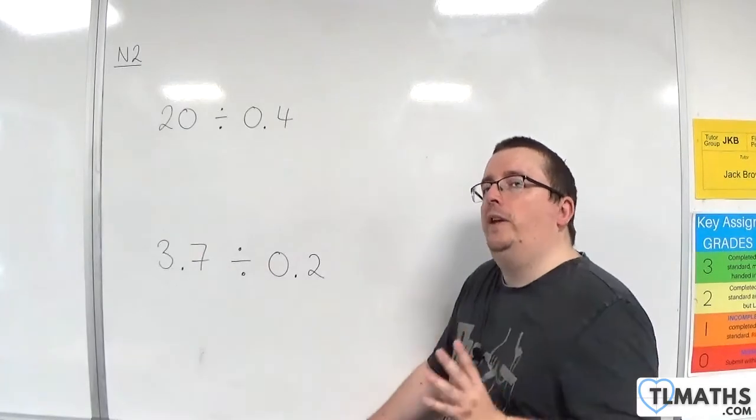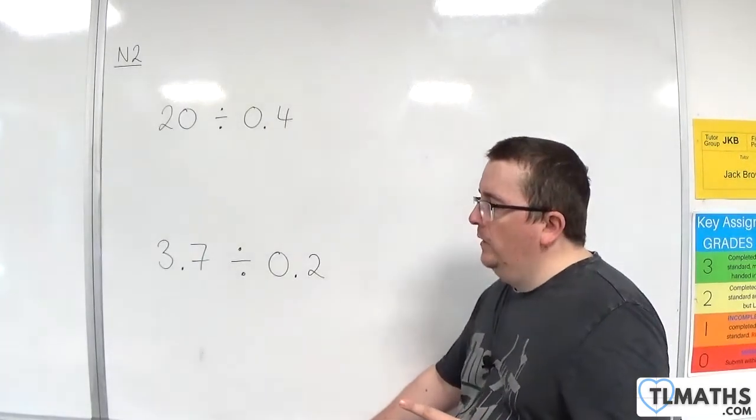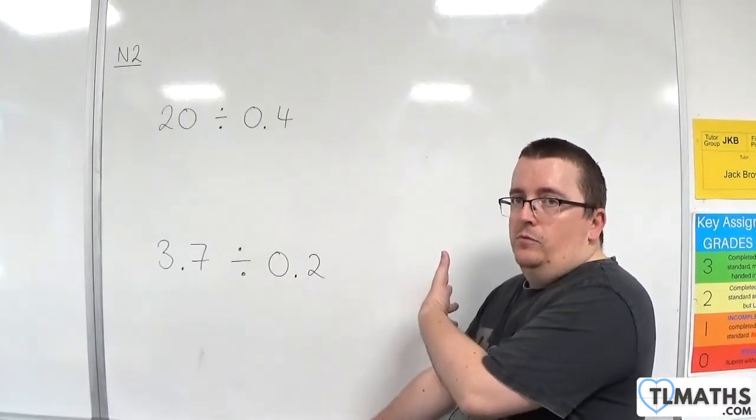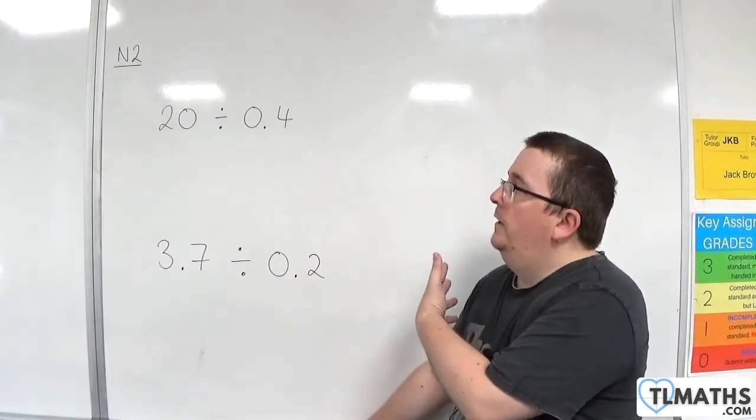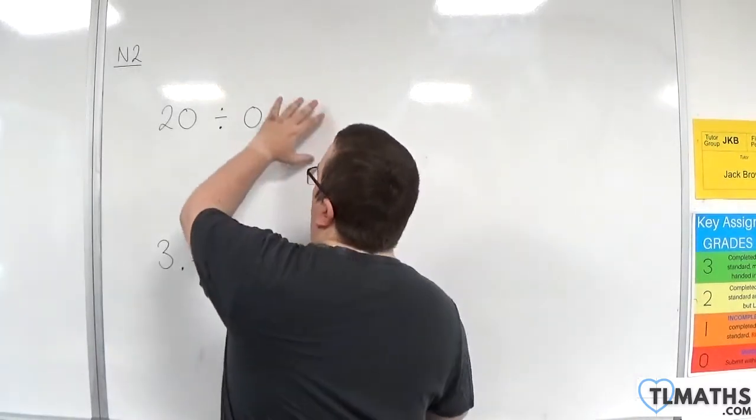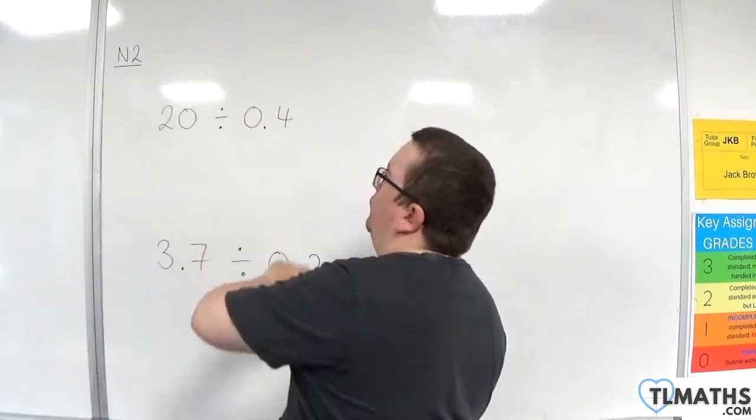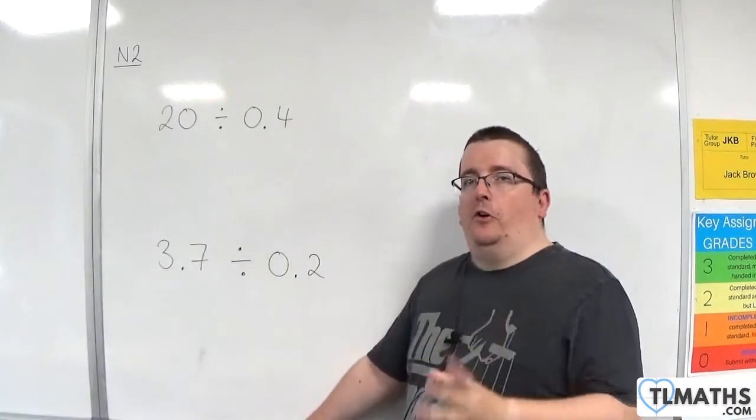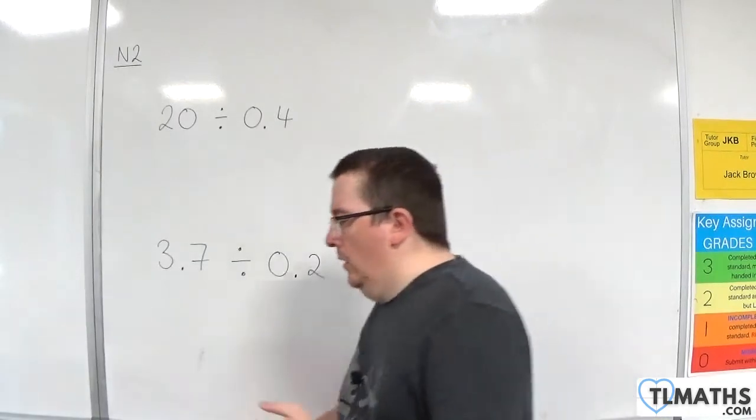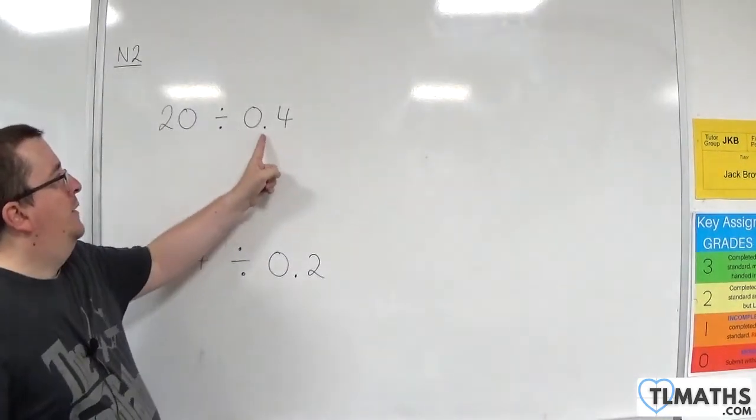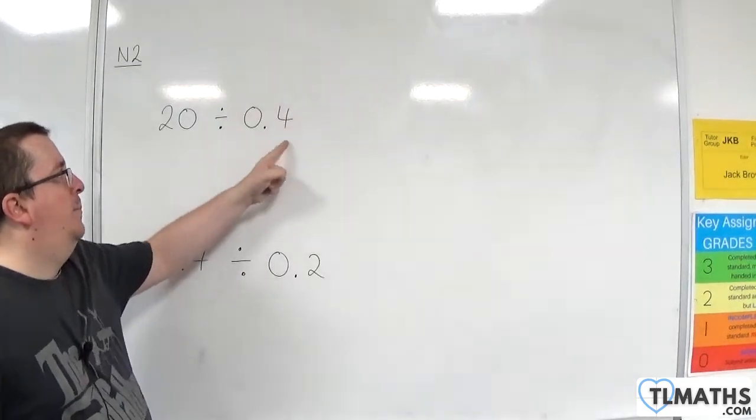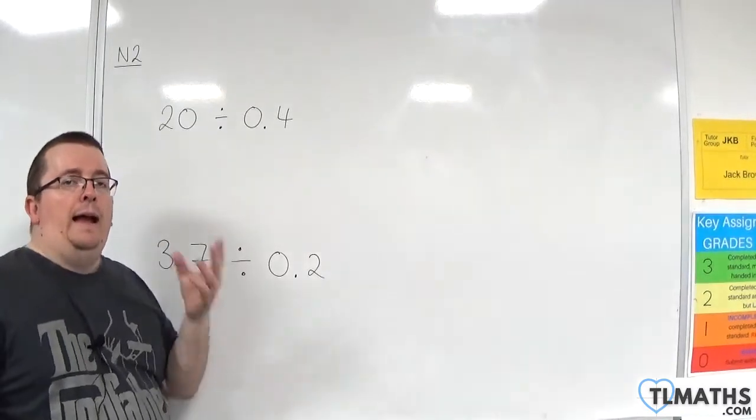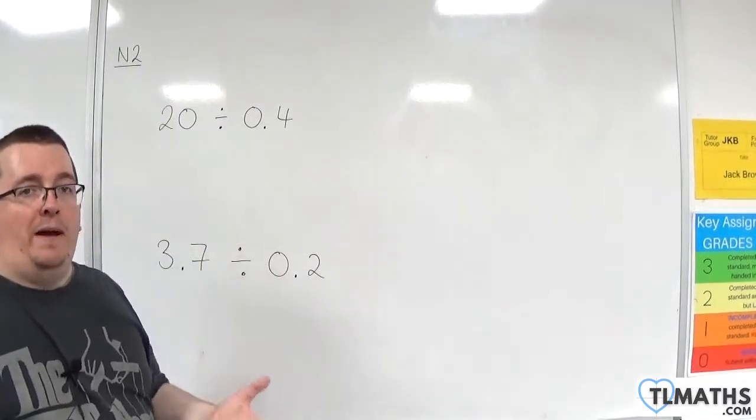I want to show you how we can deal with that. Before we begin and go into the process, we need to change this part of the problem, this 0.4. What we do is we want to get rid of the decimal. The way to do that would be to multiply this by 10. If I multiply that by 10, I would get 4, and I don't then need to worry about the decimal.